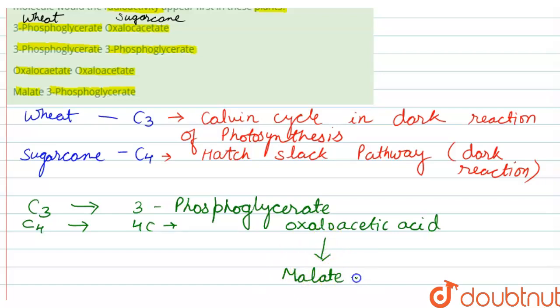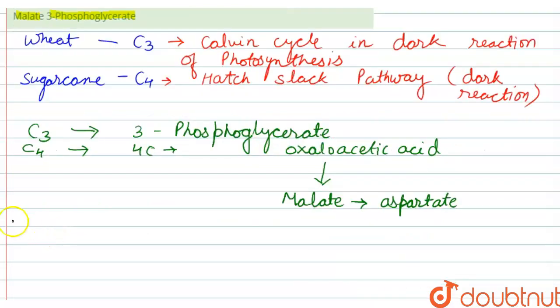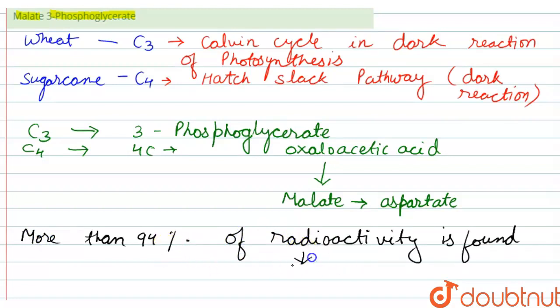This can be transmitted to aspartate, or aspartic acid. Malate and aspartate refer to malic acid and aspartic acid respectively. More than 94 percent of radioactivity is found in malate, aspartate, and oxaloacetic acid.